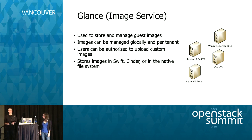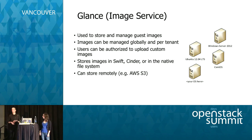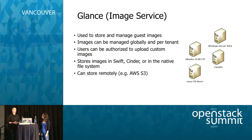You store Glance images in different projects and on different types of storage — we'll talk about Swift and Cinder in a moment. You can also store them on the native file system right in your Linux host itself, or in AWS S3 or any other object storage that has an API to interact with it.